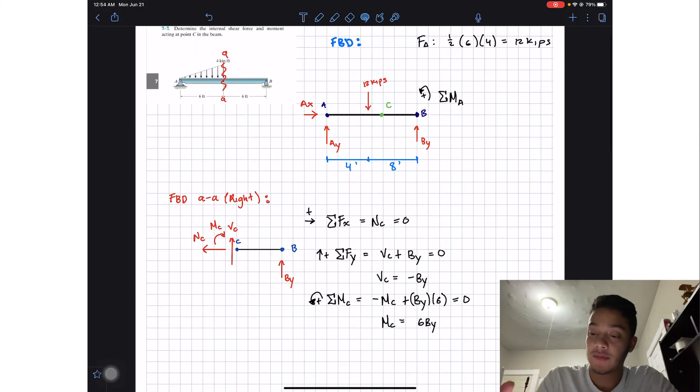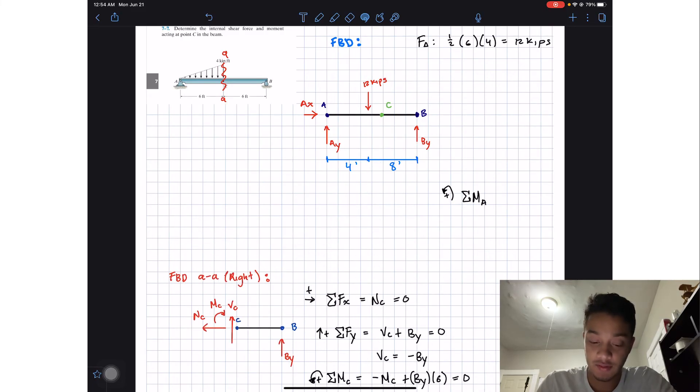What is this equal to? Well holding here and having my 12 kilopounds will rotate me clockwise so I'll have negative 12 multiply by 4 feet. And then holding here, By going like this will rotate me counterclockwise, we'll have positive By multiply by 12 feet. All this should be equal to zero.